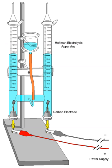The key process of electrolysis is the interchange of atoms and ions by the removal or addition of electrons from the external circuit. The desired products of electrolysis are often in a different physical state from the electrolyte and can be removed by some physical processes. For example, in the electrolysis of brine to produce hydrogen and chlorine, the products are gaseous. These gaseous products bubble from the electrolyte and are collected.